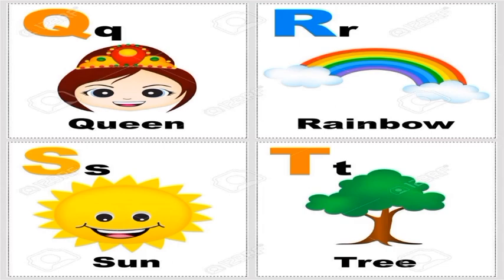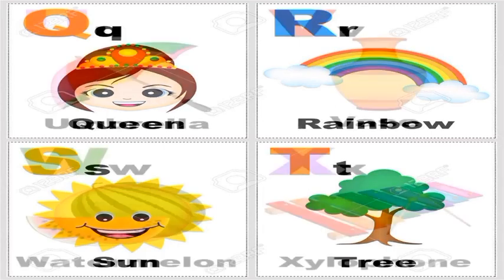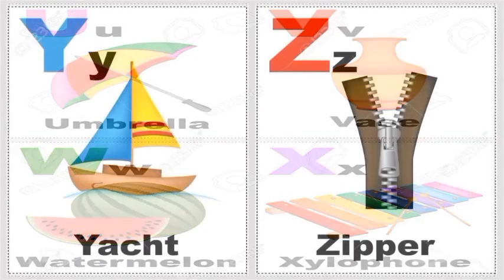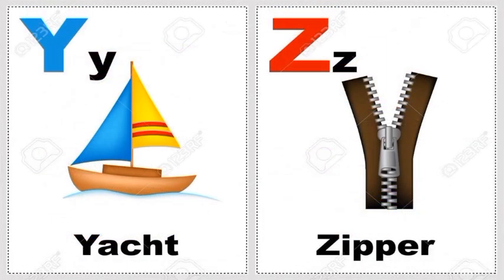U for Umbrella, V for Vest, W for Watermelon, X for Xylophone, Y for Yak, Z for Zebra.